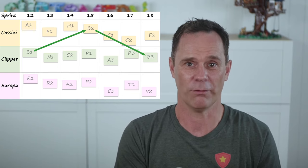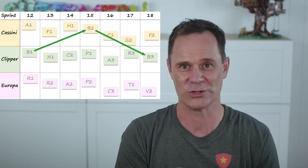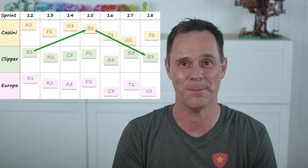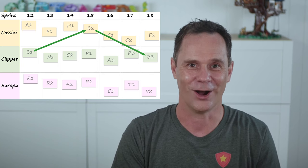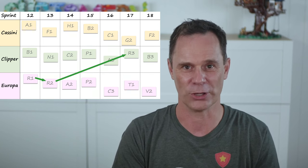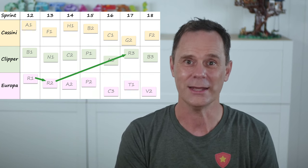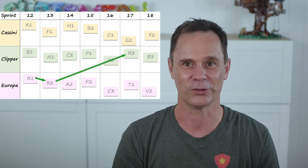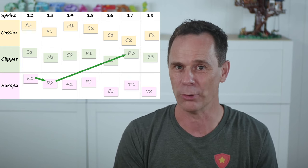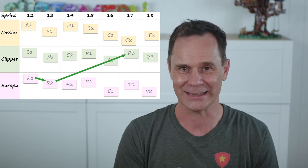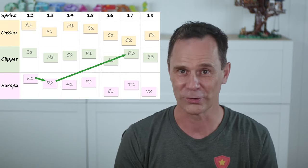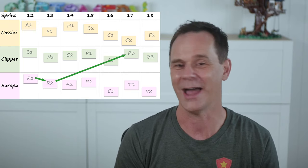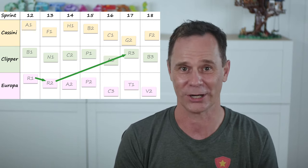There's a buffer of two sprints between the features in set B — longer arrows are even better. R2 is dependent upon Europa completing R1 immediately prior. Short horizontal arrows indicate there's no wiggle room here, but at least R1 and R2 are both within Europa's control and they're not dependent upon another team.